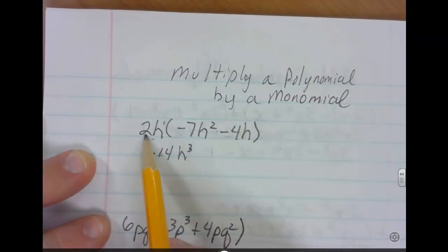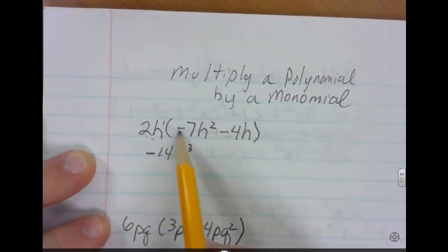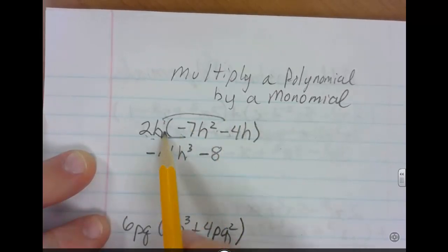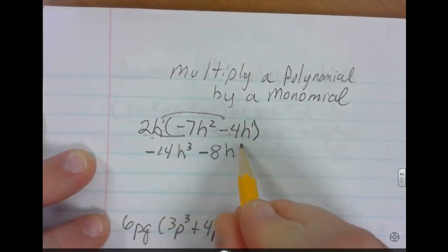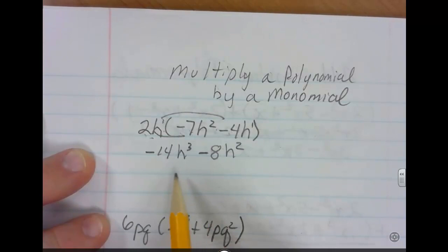Now we're going to move on to the next one. So 2 times the negative 4, so we're just distributing here. 2 times negative 4 is going to give you negative 8. h to the first times h to the first is h to the 1 plus 1 or h to the second. And this is our simplified expression, negative 14h cubed minus 8h squared.